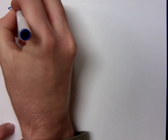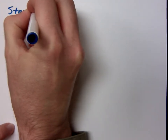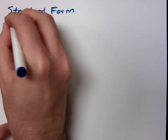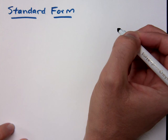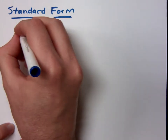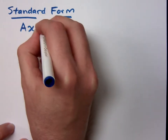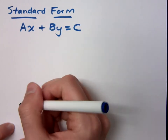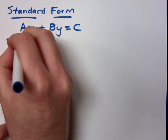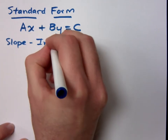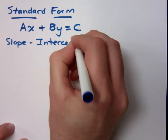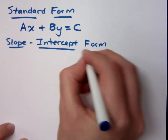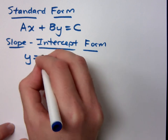Let's review more about what we know with lines. Do you guys remember the standard form for a linear equation? AX plus BY is equal to C. We've already talked about how the slope-intercept form is Y equals MX plus B.